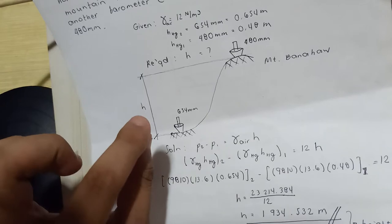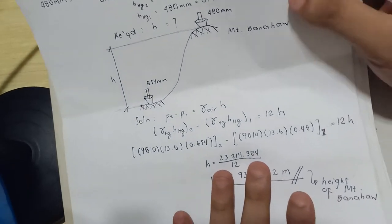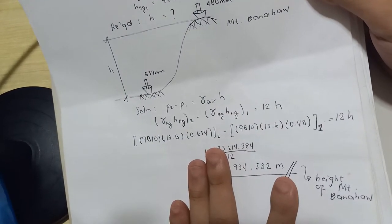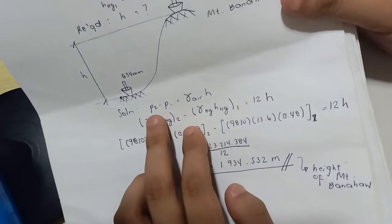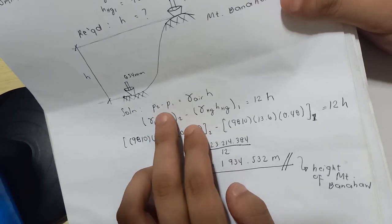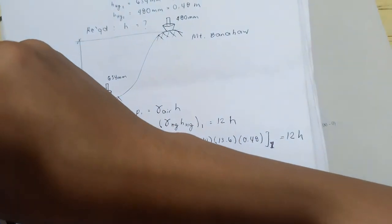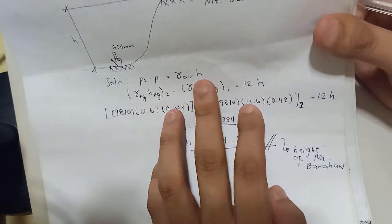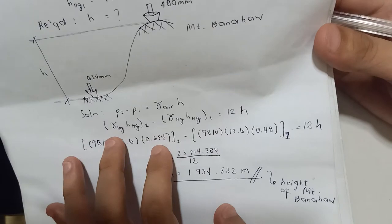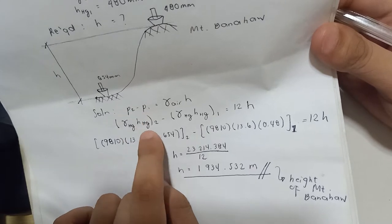We are asked for the height of Mount Banahaw. This involves two pressures, so we use the variation of pressure equation: P2 minus P1 equals unit weight of the fluid times height. Since it involves mercury, we express pressure using the unit weight of mercury.